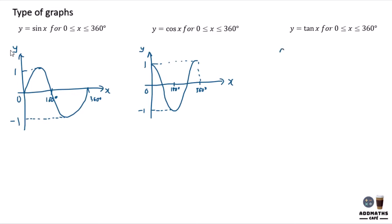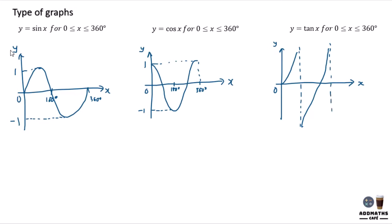For tangent, you have to sketch the y-axis and x-axis. Tangent x will start from 0, and then draw the asymptote — we call this line the asymptote. The line won't touch the asymptote. It goes up, and the end here will be 360 degrees. Half of it is 180 degrees. There's no maximum and no minimum. This part will be 90 degrees, and this part will be 270 degrees. This is a tangent x graph.